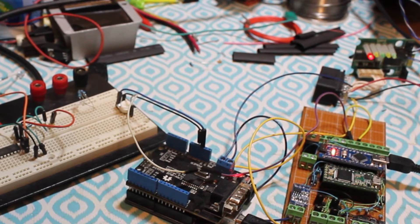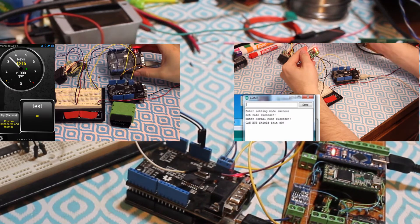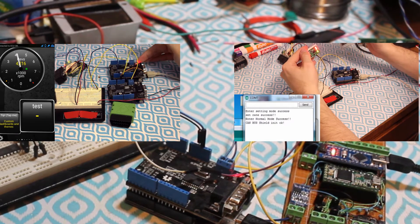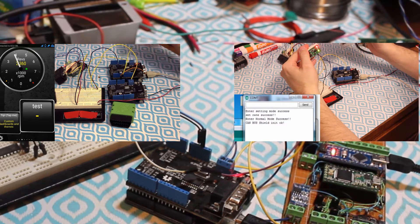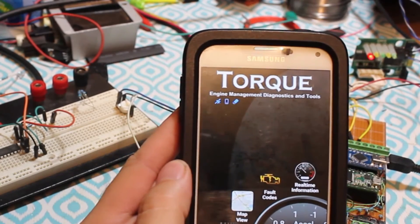If you saw my earlier videos on debunking the OBD2 Fuel Saver or on adding new parameters to the CAN bus, you'll quickly recognize my Arduino Uno with its CAN shield. It's still acting as an ECU simulator, but I've added one more feature.